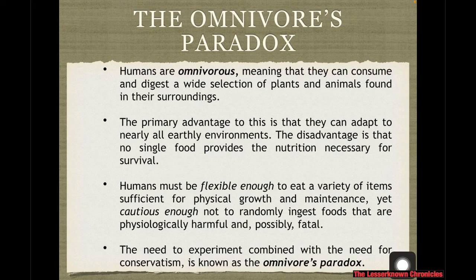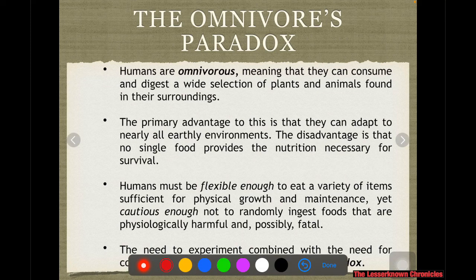This is the second part of our overview for gastronomy, and I will start with the omnivore's paradox. We humans are omnivorous, meaning we consume both plants and animal products. The advantage of being omnivorous is that we can adapt to almost any environment, meaning we can consume a lot of different types of food in most places.